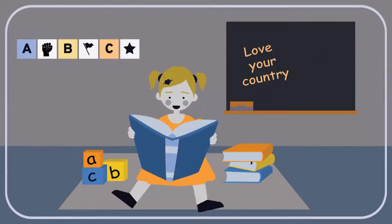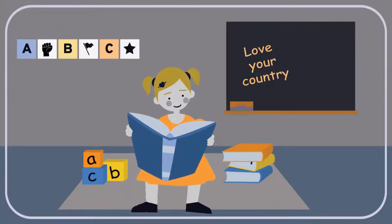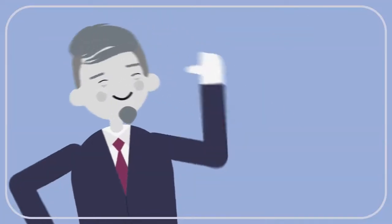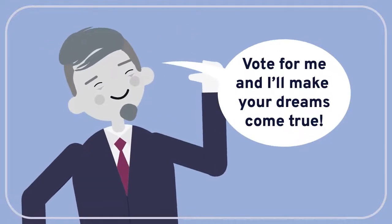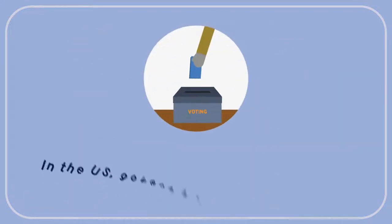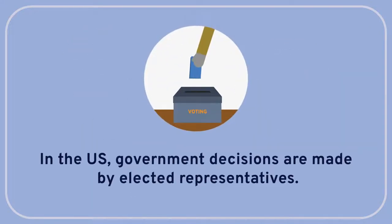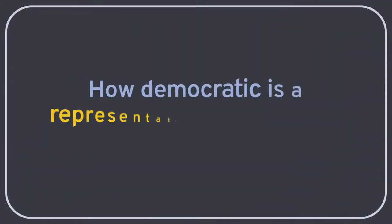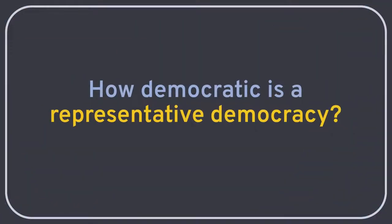If you grew up in the United States, you might have learned in school that the U.S. is not in fact a democracy, but a republic, precisely because in the U.S. the laws are made by elected representatives. That's a false dichotomy, as can be seen from the fact that many countries are called democratic republics, with no apparent contradiction. Still, you might wonder, how democratic is a representative democracy, really?